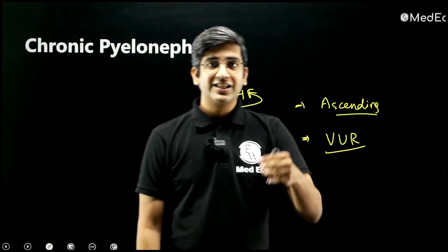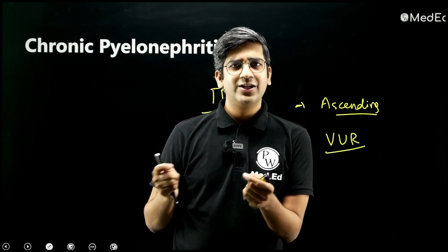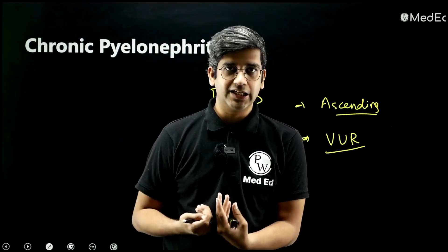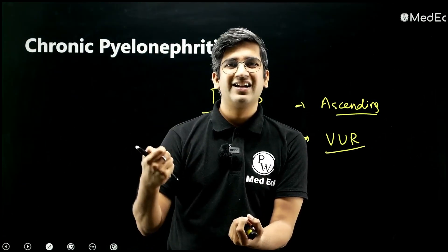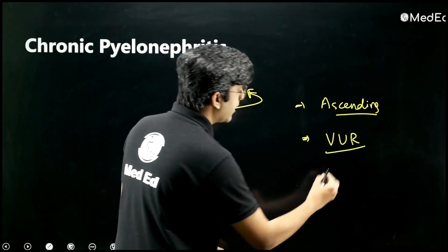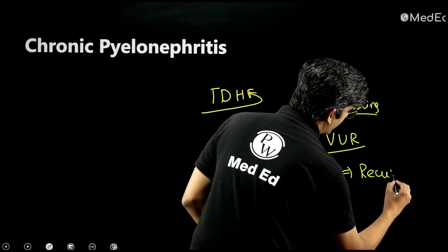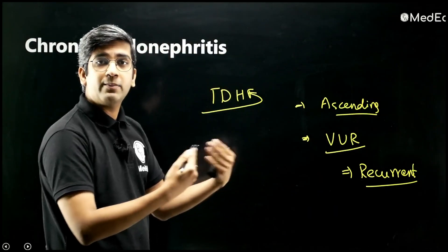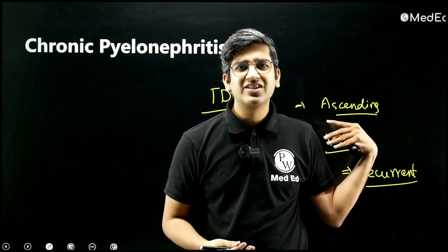VUR has five grades — grades four and five require surgical correction, while grades one and two can be managed conservatively with prophylactic antibiotics. Due to VUR, there are recurrent attacks of pyelonephritis. The more it hits, the more scar formation occurs.